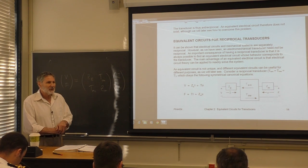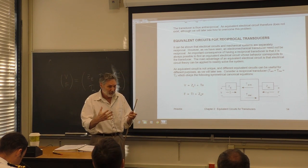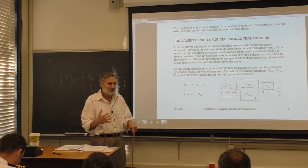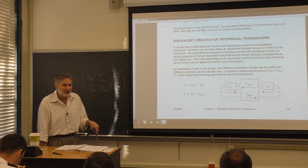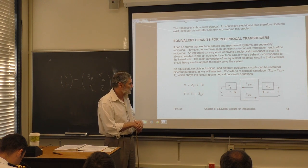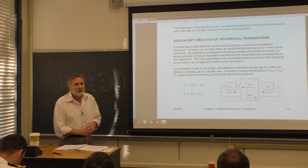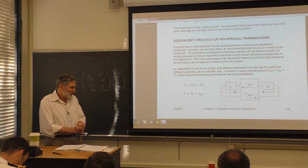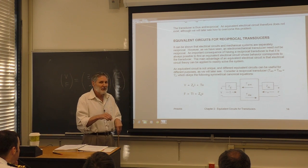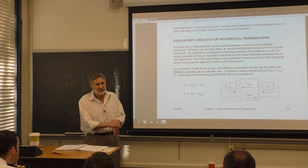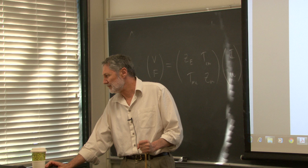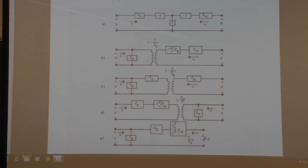We have a transducer converting between electrical and mechanical energy. We want an equivalent electrical circuit, then apply Kirchhoff's laws — it becomes completely electrical, equivalent to the electromechanical transducer. There are what I call the 'infamous five' equivalent circuits; they're all equivalent to each other and to the canonical equations.